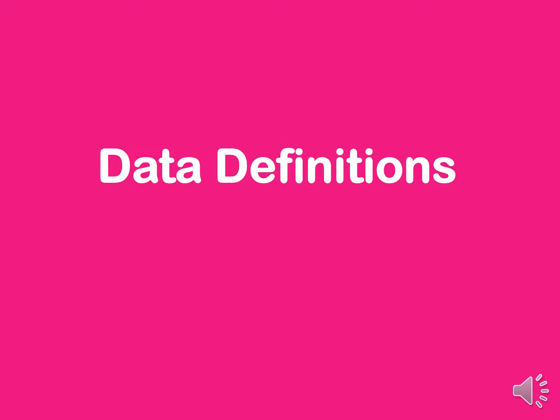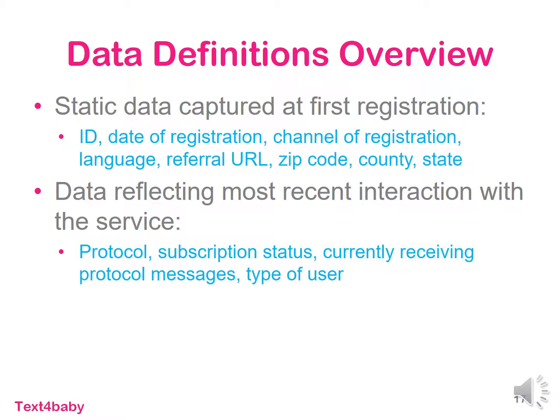Next, let's take a look at the data definitions so you can understand all of the different types of data you'll be seeing on the portal and be able to use it more effectively when you go to analyze it. There are two types of data that we collect in the portal. The first is static data, meaning that it doesn't change over time, and this is captured when a user first registers for our program — something like their date of registration, their channel of registration, or their zip code. The second type of data reflects the user's most recent interaction with the service. An example of that would be subscription status: if a user is enrolled and then decides to unsubscribe by texting the word stop to our short code, one day their subscription status would be listed as on, and the next day it would change to be listed as off.